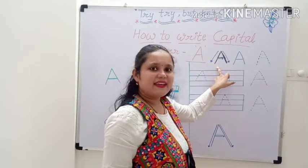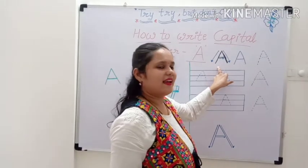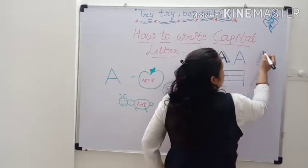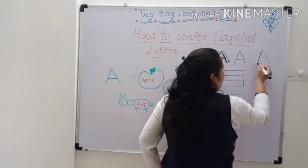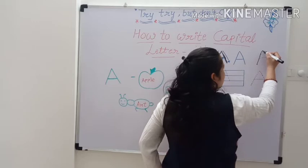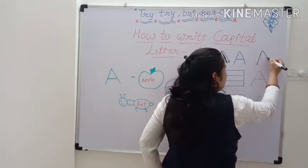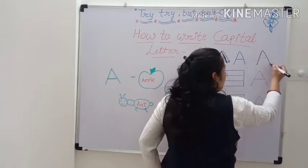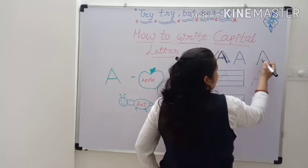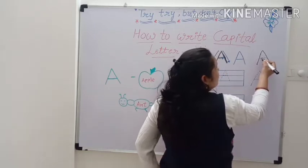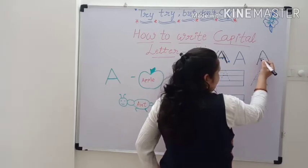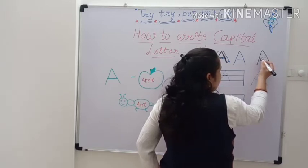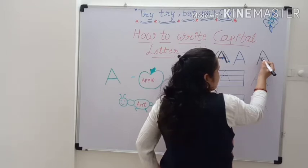It's very easy. Now repeat again. Starts from the top. Draw a slanting line downwards. Go to the top. Draw another slanting line down to the opposite side. Now go a little below the middle. Draw a slanting line across.